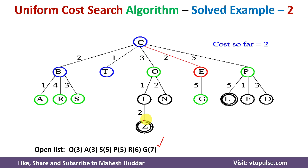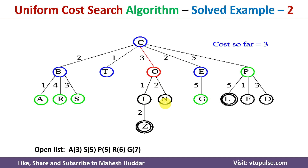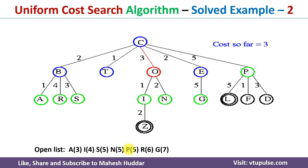We haven't reached the goal node, so we take the next element from the open list, which is O3. Once I remove it, I explore O and find two paths: I and N. To reach I, the cost is 4. To reach N, the cost is 3 plus 2, which equals 5. I add all those possibilities into the open list.